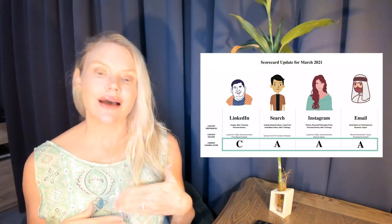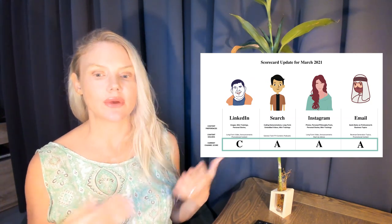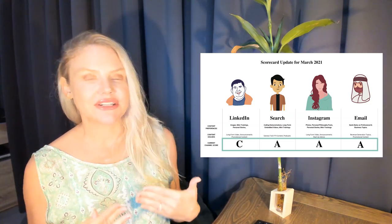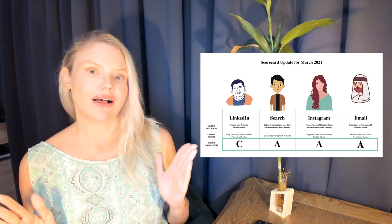In terms of the actual scores I gave to each channel, the scores should be firmly rooted in the number of leads and sales each of your channels is generating for your business. Simply because my LinkedIn channel did not result in a lot of leads and sales relative to the other channels, I gave it a C, which stands for good. Search, Instagram, and email all performed up to satisfaction, so they all got A's. That's a really important point — it highlights the difference between growing a personal brand versus a business. In a business, your metrics and scores and all of your marketing efforts need to be tied to leads and sales.